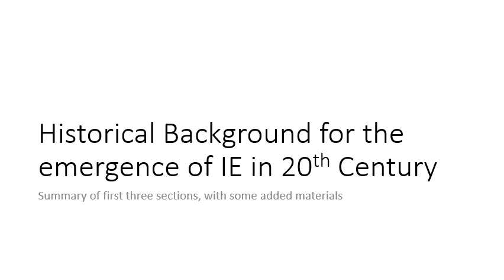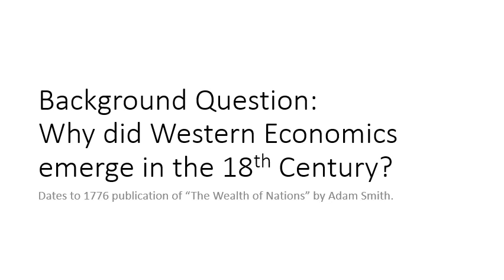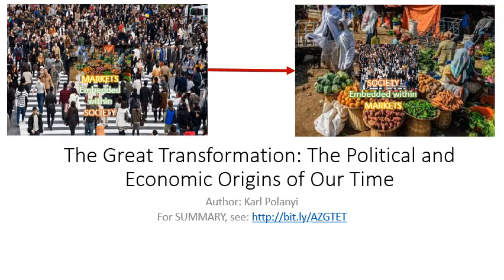Understanding the historical background of why Islamic economics emerged in the 20th century is quite complex. We must start with a different question: why did Western economics emerge in the 18th century? It is dated to the publication of 'Wealth of Nations' by Adam Smith in 1776. The complex answer is provided in 'The Great Transformation' by Karl Polanyi. The essence of the book says that traditional society had markets which were part of society, but society as a whole was dominant — social and political structures controlled the economic structures. In the Great Transformation, this became reversed and markets took control of society. Social and political structures became subordinate to economics. This is the process of the Great Transformation.